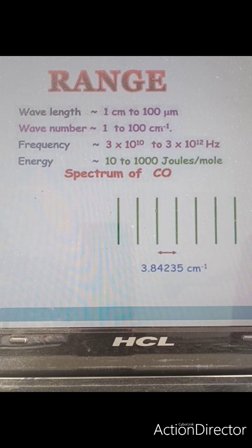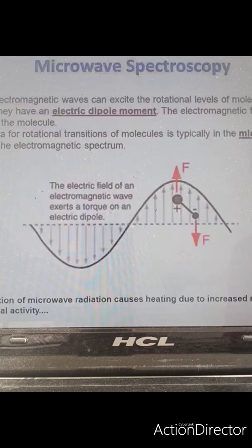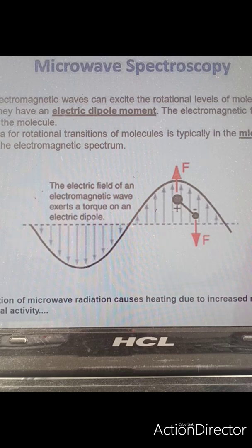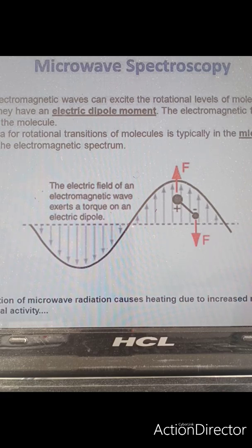When we talk about microwave spectra, it is possessed by those molecules which have a permanent dipole moment. Such molecules, as you can see here, can rotate and generate an electric field that can interact with the electric field component of the microwave radiation. During this interaction, energy can be absorbed or emitted. So this is the important condition: those molecules which are microwave active should have a permanent dipole moment.